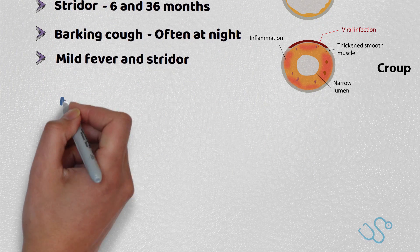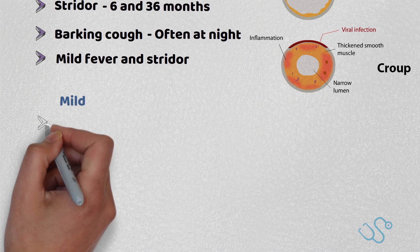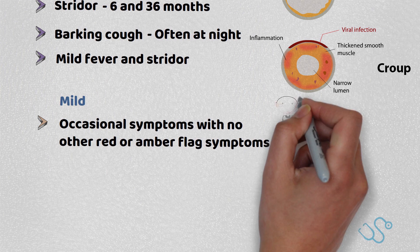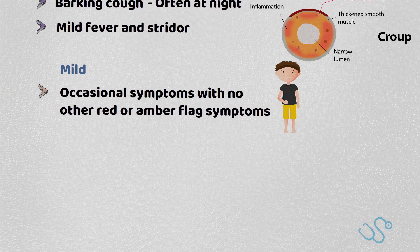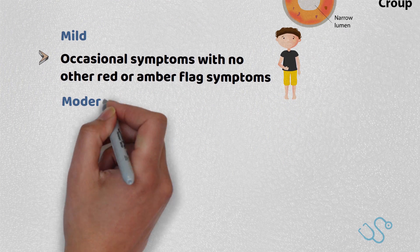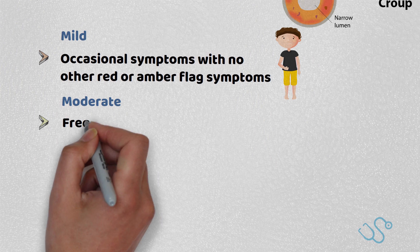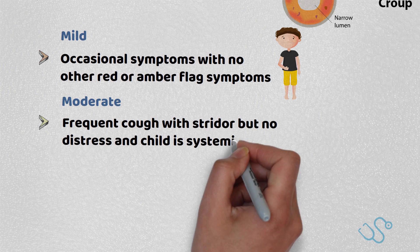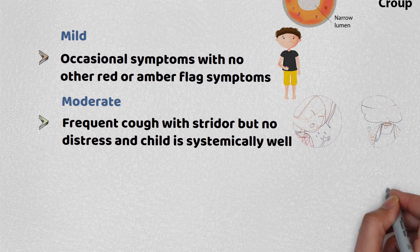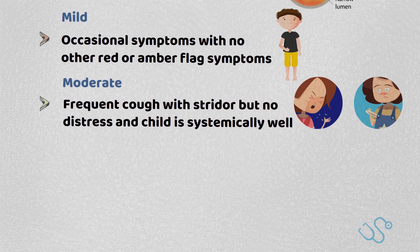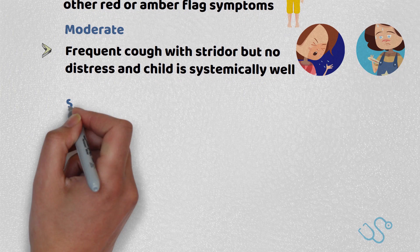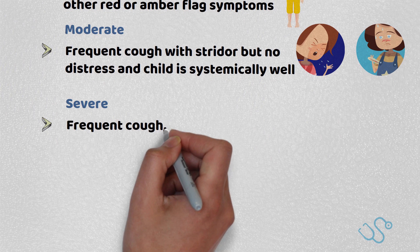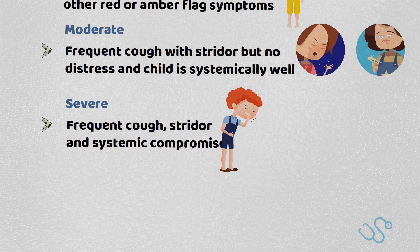Mild symptoms include occasional symptoms with no other red or amber flag symptoms. Moderate cases include frequent cough with stridor, but no distress and the child is systemically well. Severe features include a frequent cough, stridor or systemic compromise.